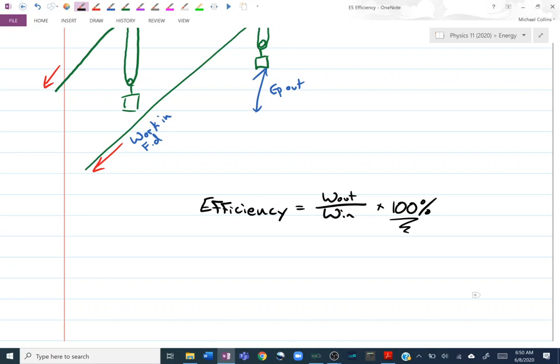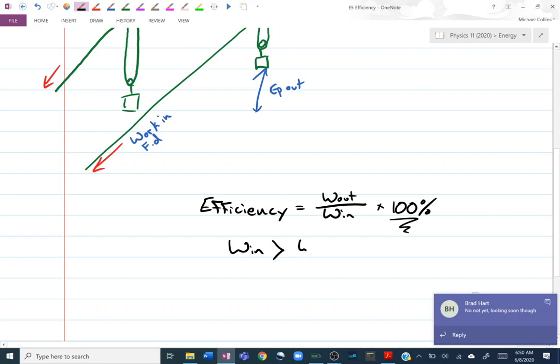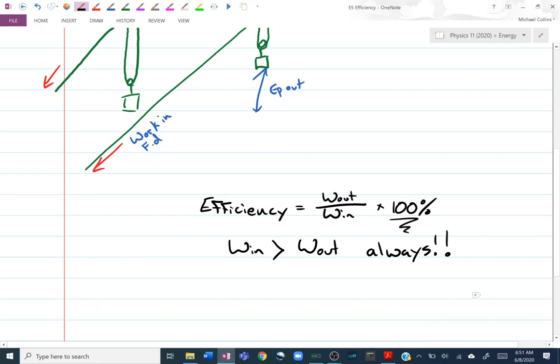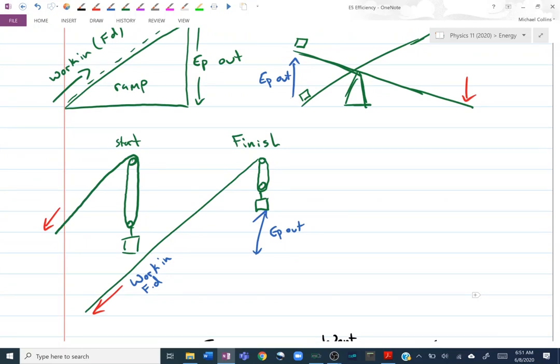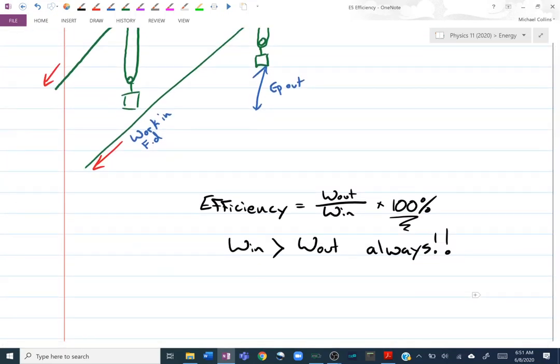So, again, due to conservation of energy, you will always have to put more work in. Work in will always be greater than work out. Always. As a matter of fact, the work in will never even be equal to the work out. In reality, you will never get a machine that is perfectly efficient. You will always lose energy in some way, shape, or form. If it makes a sound at all, you're losing energy. If it deforms the thing at all, you're losing energy. So there's no way that work in will ever equal work out. So work in will always be bigger than work out, which means your efficiency will always be less than 100%. Always.